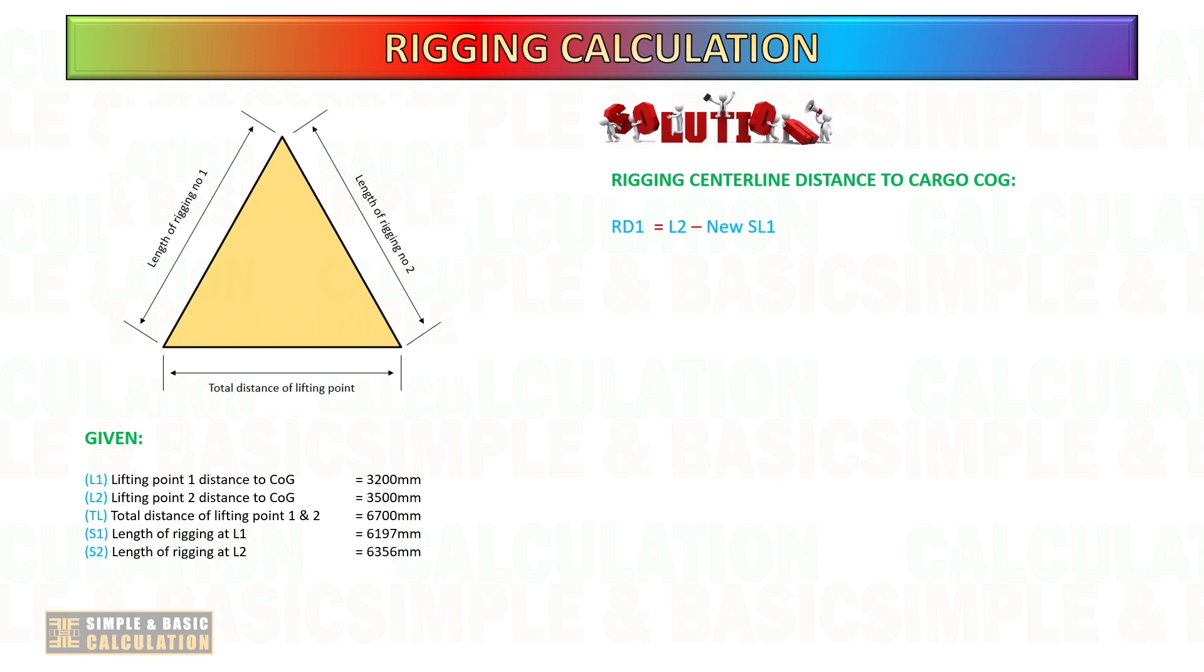Once you got all the necessary data, you may proceed to calculate the position of the rigging center line in relation to the cargo center of gravity. Formula and calculation as shown. In this case, we reach a rigging center line distance to the center of gravity of 1.05 millimeters. This provides excellent value for optimizing load balancing.